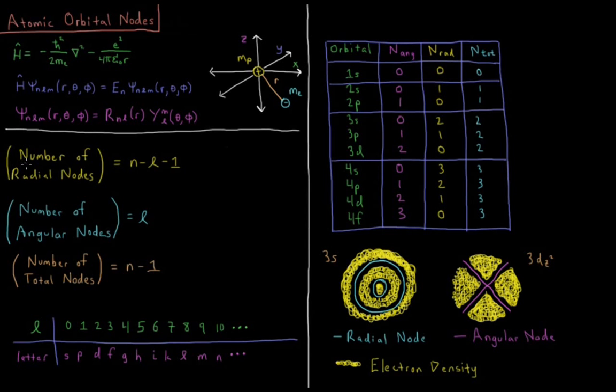The number of radial nodes that we have is determined by the quantum numbers N and L. The number of radial nodes is N minus L minus 1. The number of angular nodes that we have is determined by our spherical harmonic function. The number of angular nodes equals the quantum number L. So the total number of nodes is the number of radial nodes plus the number of angular nodes, which is N minus L minus 1 plus L. So the total number of nodes is N minus 1.